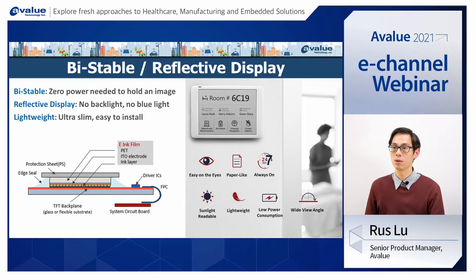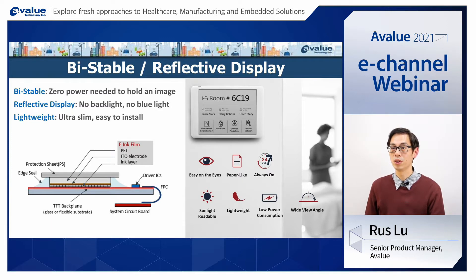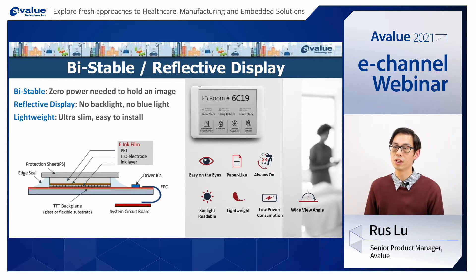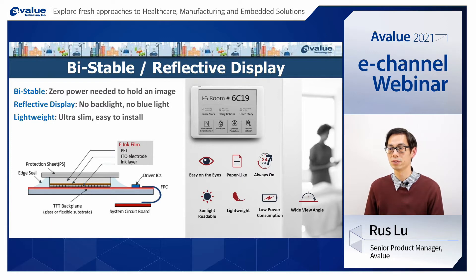Third, e-ink panel is lightweight and ultra-slim, which means we can use e-ink panel to make a very slim device. That means we can use the product in different kinds of environments, such as wall mount, panel mount, or desk mount. And with the low power consumption features, we can operate it with a battery pack, which means we don't have to deal with wiring things such as a power supply or ethernet network.